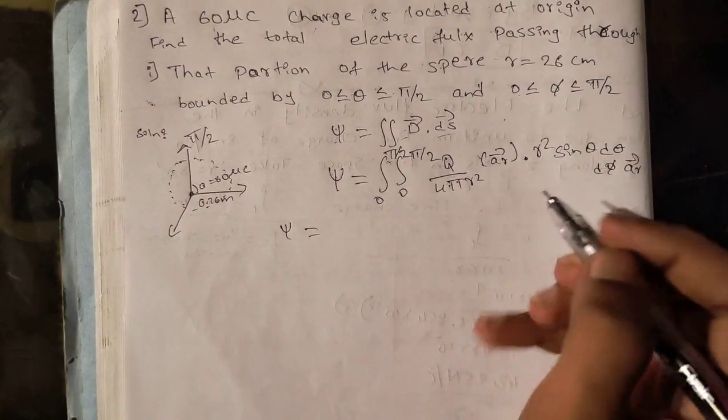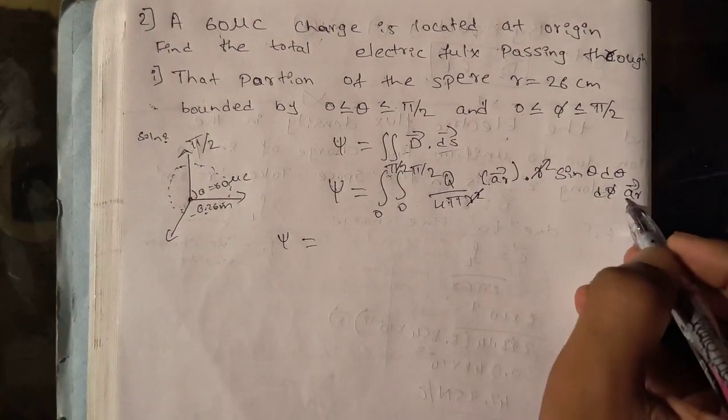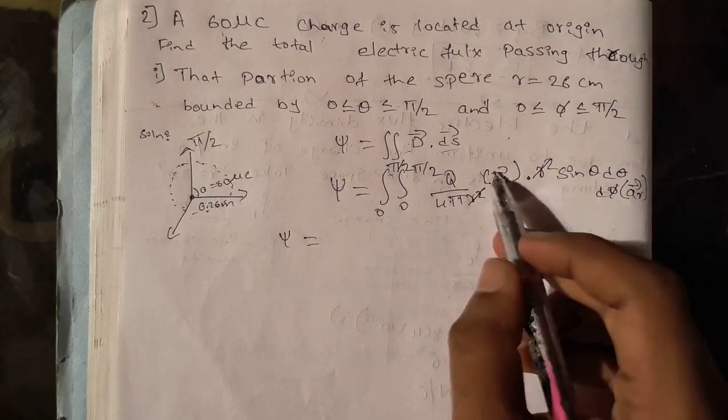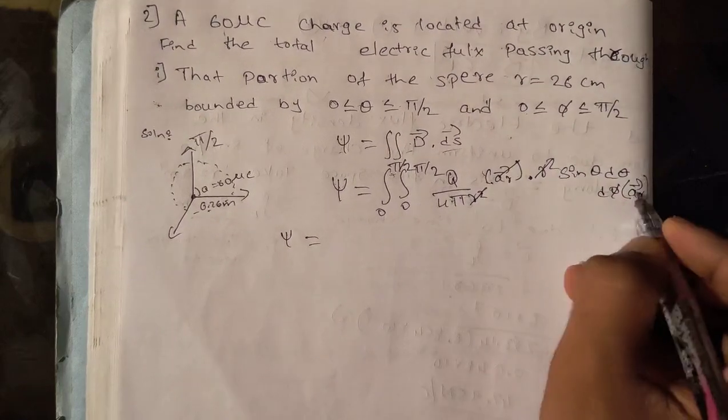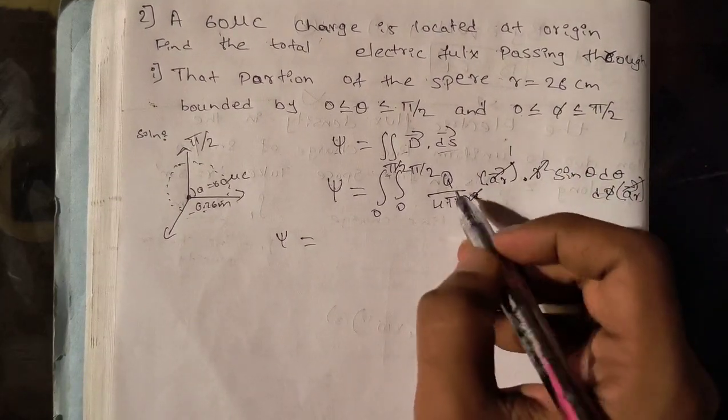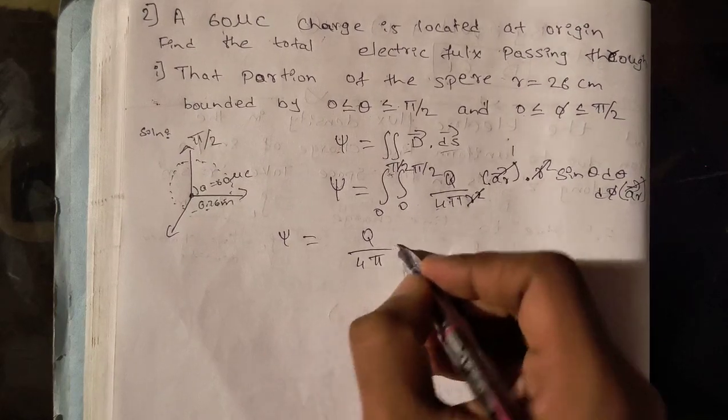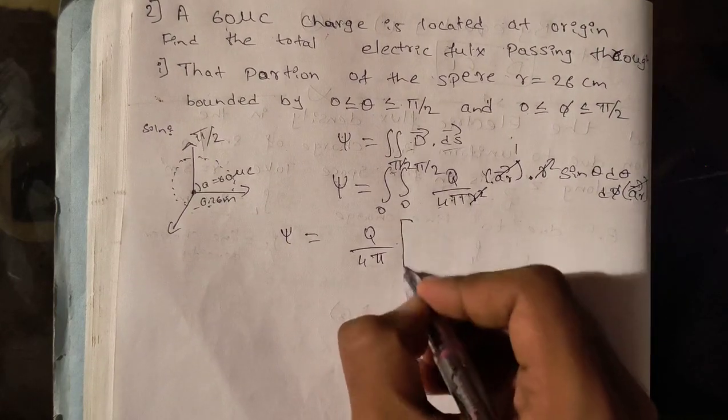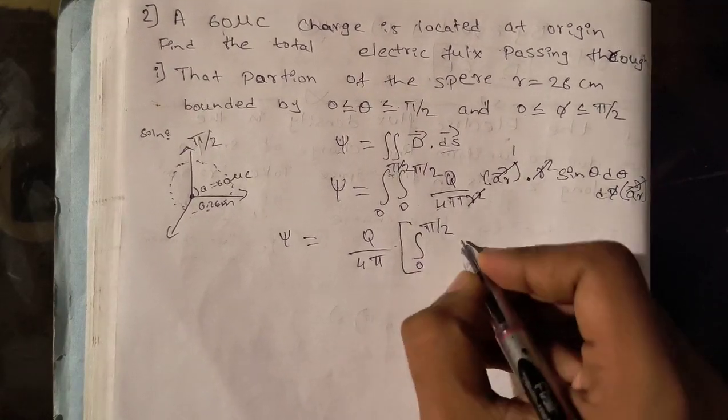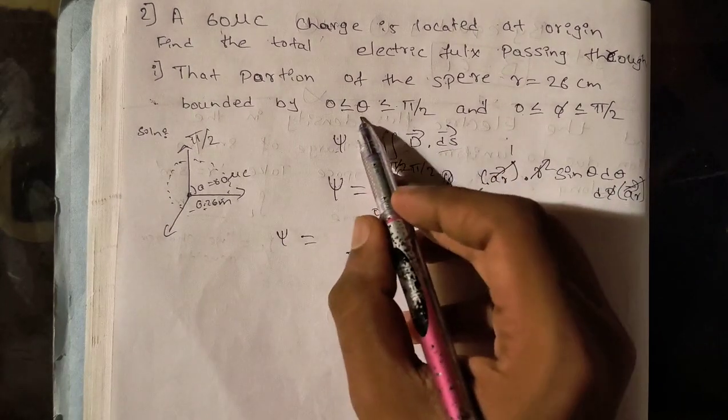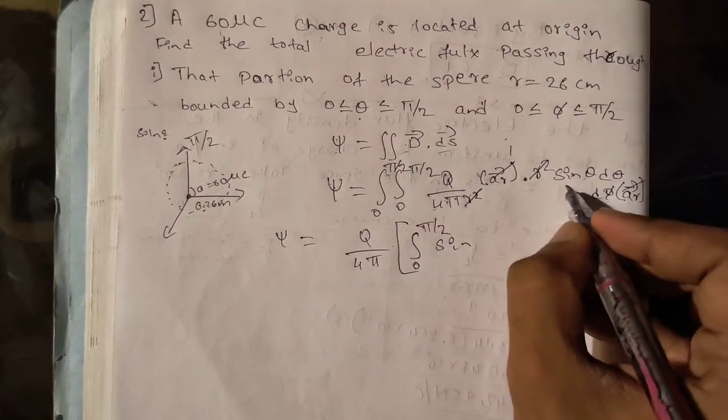Then by Gauss's law, we can write Q by 4πr² aᵣ, then dS. For a spherical coordinate system, it is r² sin θ dθ dφ aᵣ vector. Now by solving this, r² r² get cancelled, aᵣ vector aᵣ vector product is 1.